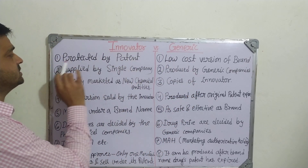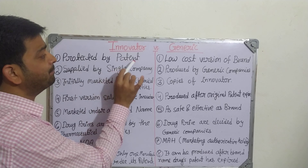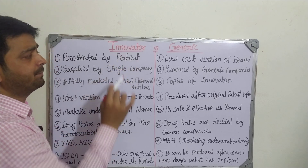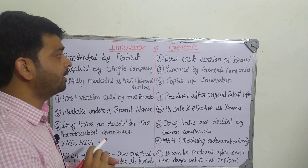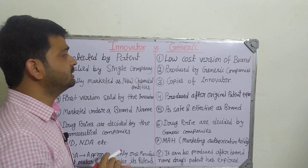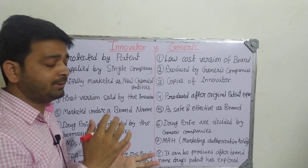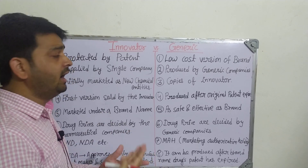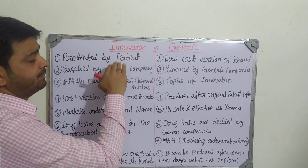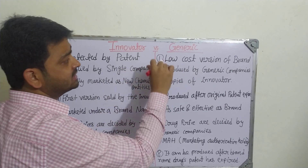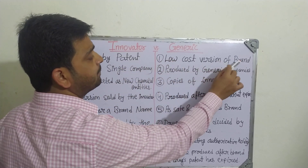Coming to the first point: the innovator drug is protected by patent. The person or group which has discovered it is going to file the patent, the patent will be granted, and it will remain under their patent. Whereas the generic drug is a low-cost version of the brand.